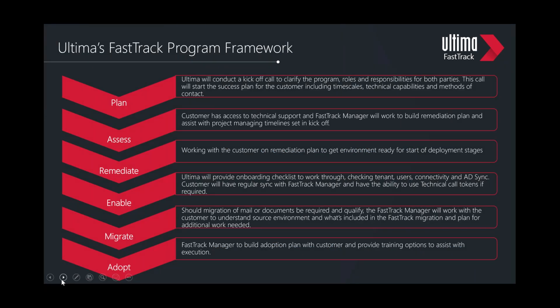There's a framework we follow on the FastTrack program to help you end to end on the deployment journey. It starts with planning — you'll be allocated a FastTrack manager within Ultima as your single point of contact. Roles and responsibilities for both parties will be discussed at that initial call. The FastTrack manager will ensure both parties understand the program, go through technical capabilities, and identify if outside assistance is needed. This builds into helping you create a project plan, migration plan, and enablement — making sure you have all the details needed to set up your tenant and connectivity.